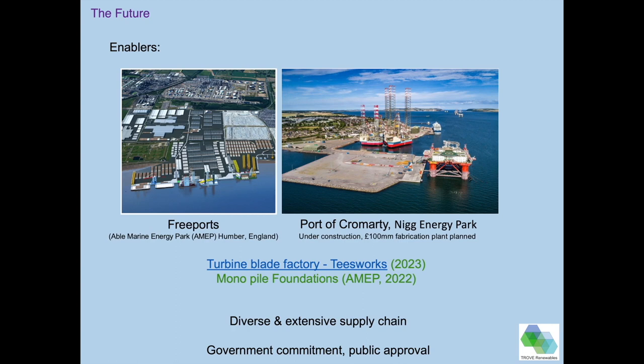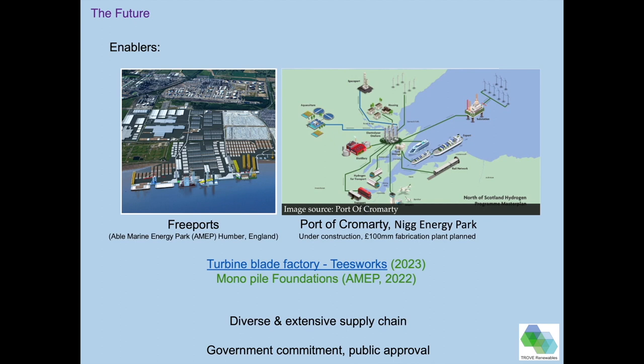Further enablers include free ports — in the Humber and many ports around the North Sea and UK that are looking to upgrade facilities. The vision of the Port of Cromarty is a great example: offshore wind farms with substations feeding back to electrolysers onshore producing green hydrogen, with a whole infrastructure around hydrogen transport, rail networks, and shipping. Lots of distilleries and opportunities to use the power, creating an increasingly diverse and extensive supply chain and customer base.